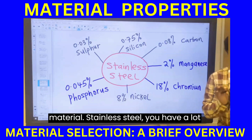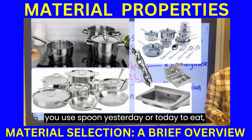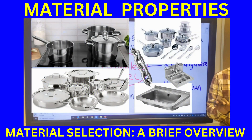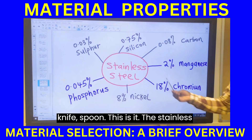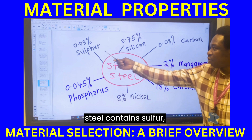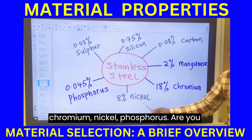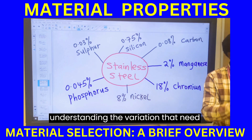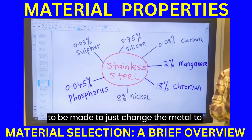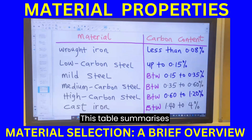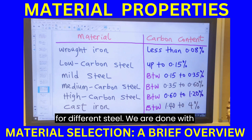Stainless steel is found all around us — in your kitchen, your spoons, forks, and knives. Stainless steel contains sulfur, silicon, carbon, manganese, chromium, nickel, and phosphorus. You can see the variation in composition that is needed to change a metal into something different. A table summarizes the materials and carbon content for different types of steel.